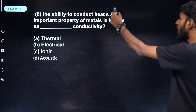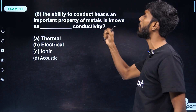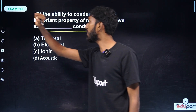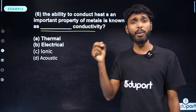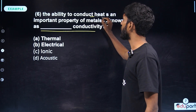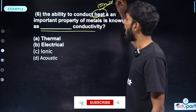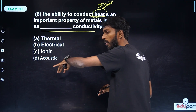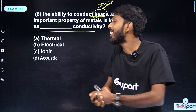The ability to conduct heat is an important property of metals, known as thermal conductivity. What conductivity? Thermal conductivity, electrical conductivity, ionic conductivity — everything.